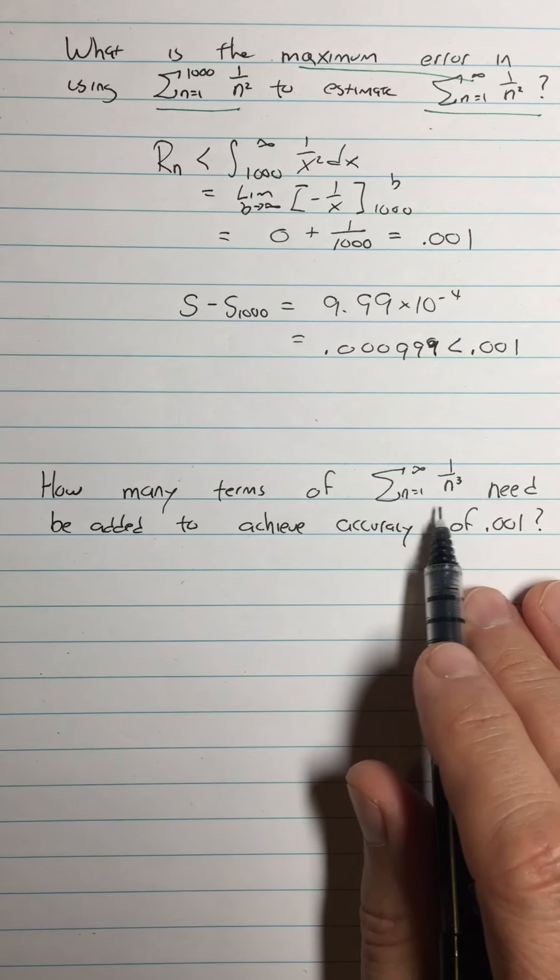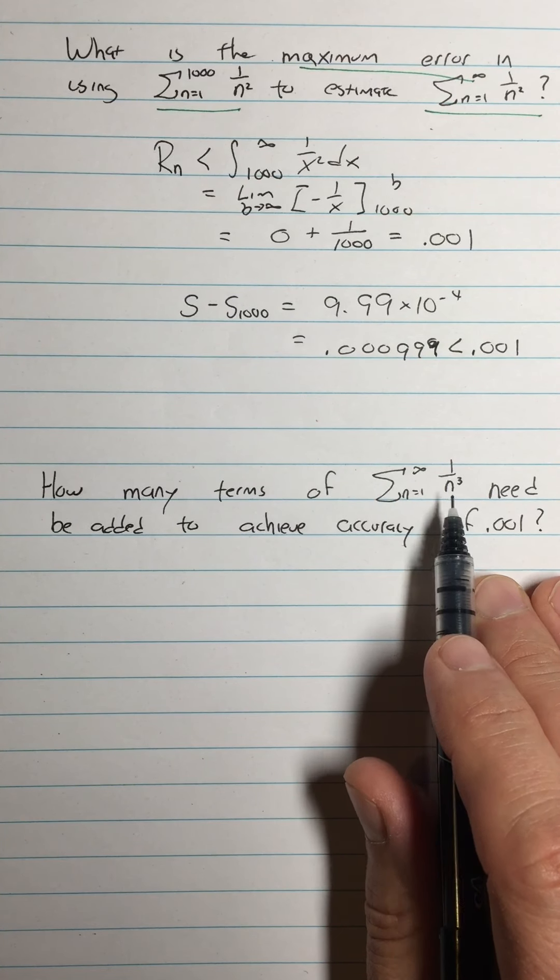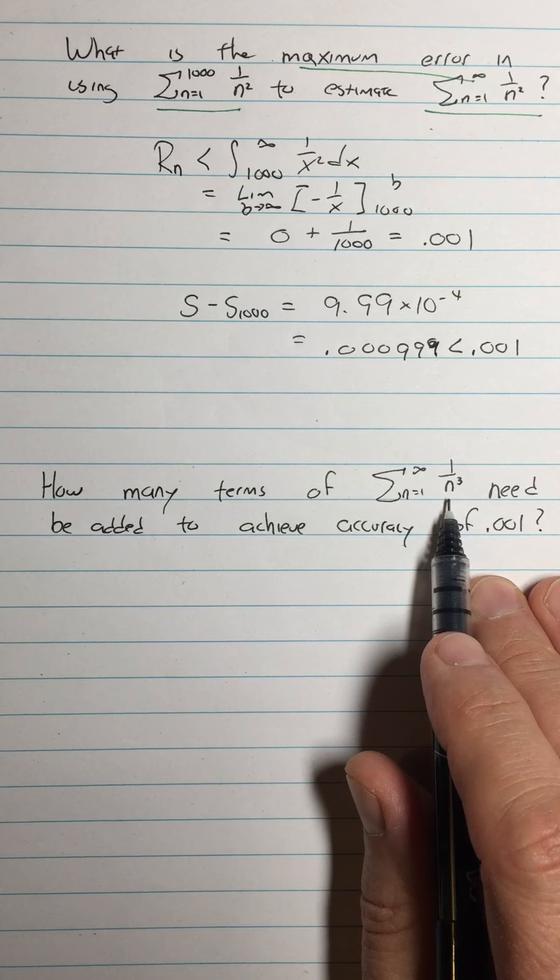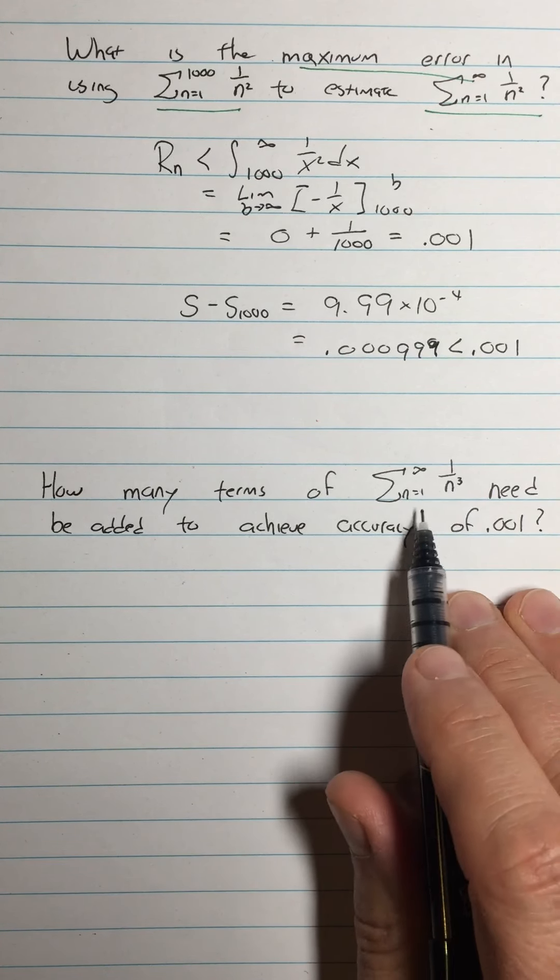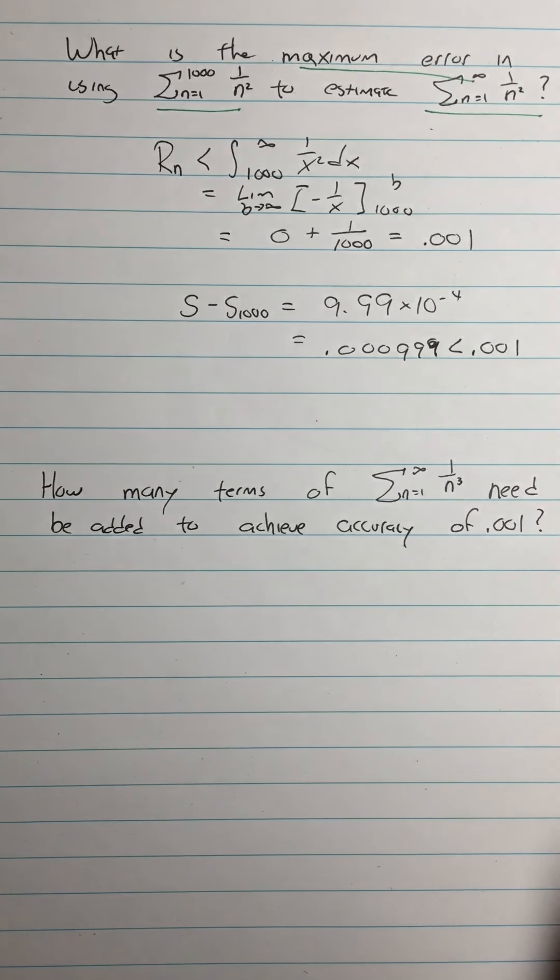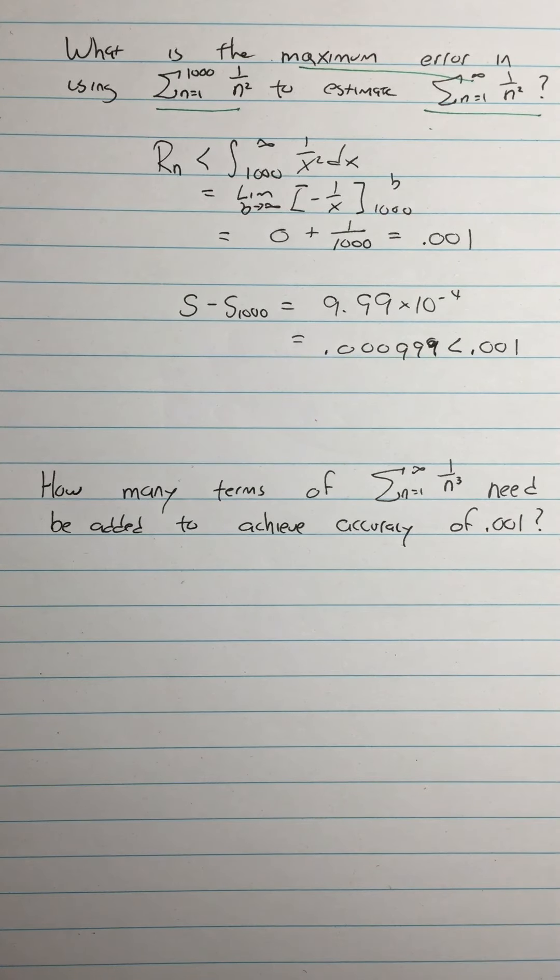So I don't want to add up more terms than I need to, because it takes quite a lot of time to add up finitely many terms. So we're going to look at a sum that we don't know the sum of, 1 over n cubed. Well, how do I know this even converges? Because it's a p-series with p equals 3. 3 is greater than 1. Therefore, this is a convergent p-series. But what does it converge to? How many terms will I need to add to get within 0.001? Find out next time.